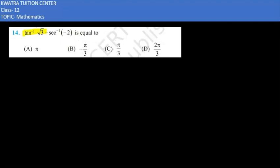In this question, we have tan inverse square root 3 minus sec inverse minus 2 is equal to, and the given options are: option A is pi, option B is minus pi by 3, option C is pi by 3, option D is 2 pi by 3.